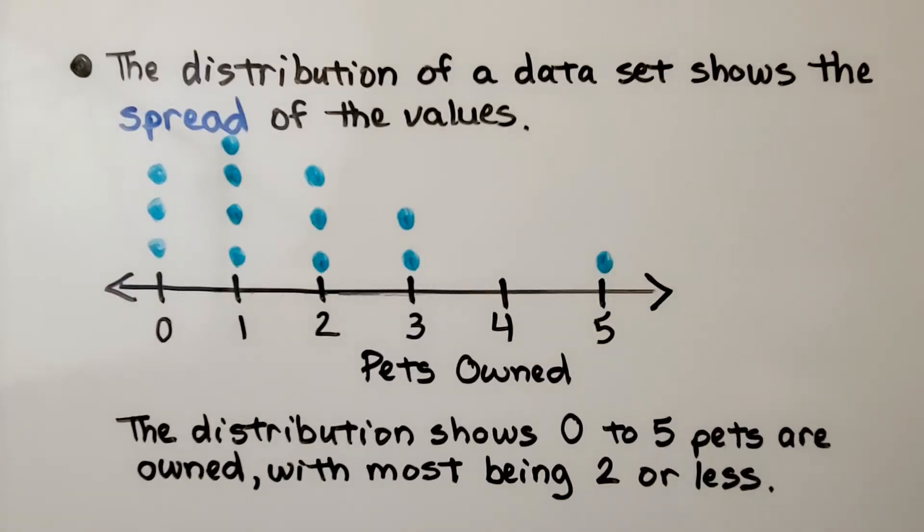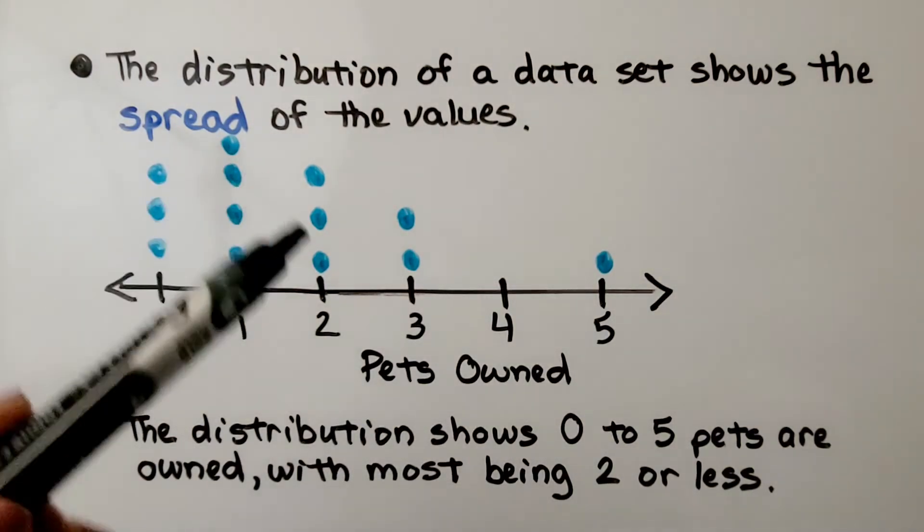The distribution of a data set shows the spread of the values. The distribution shows zero to five pets are owned with most being two or less.